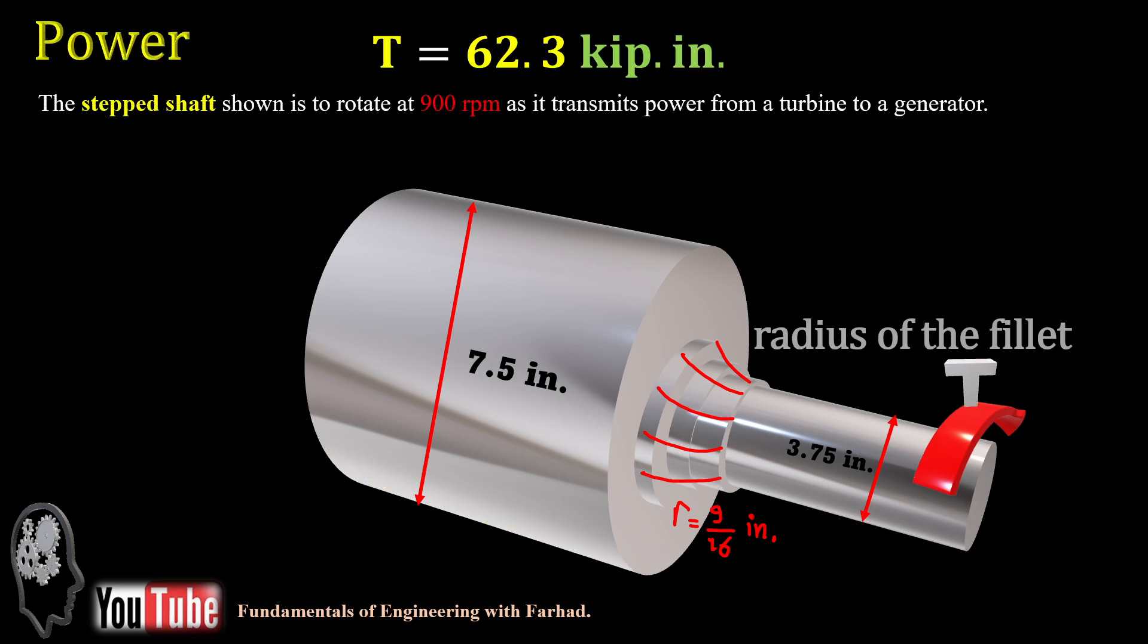To calculate the power transmitted for the stepped shaft based on problem statement, we know that it's rotating at 900 rpm to transmit the power from a turbine to a generator. We already calculated the previous part, which is 62.3 kilopound inches.